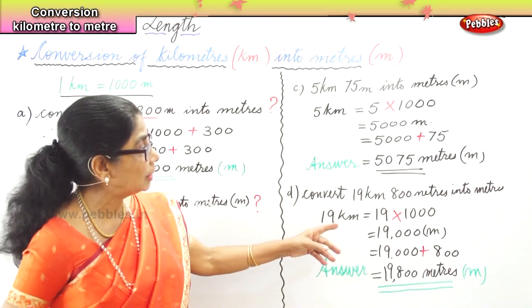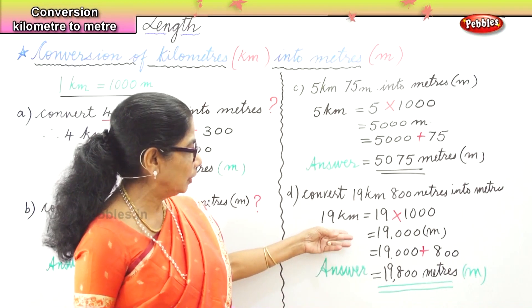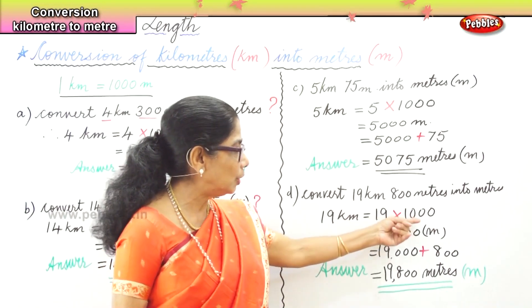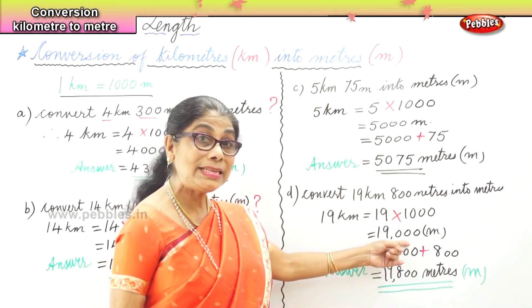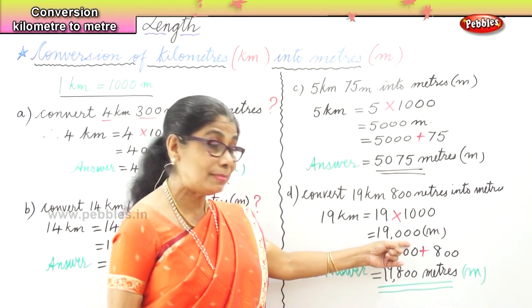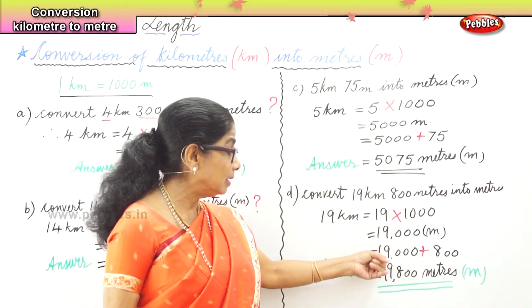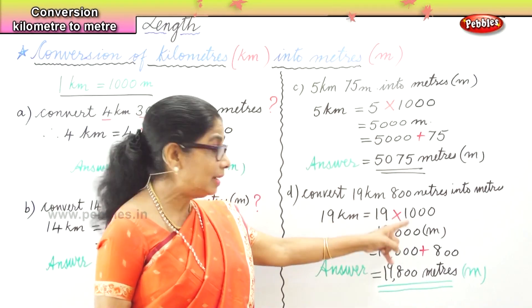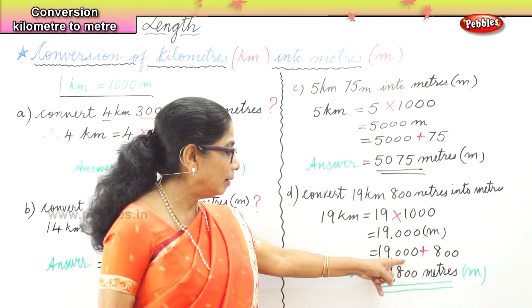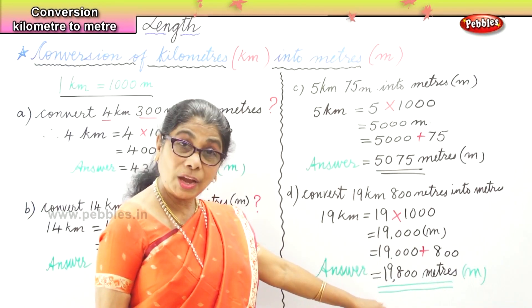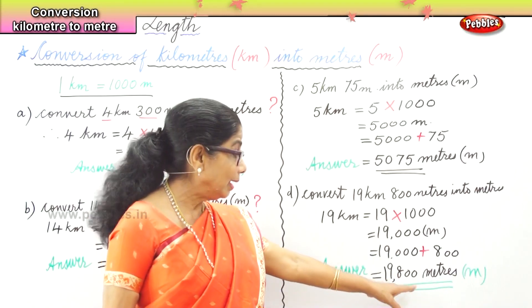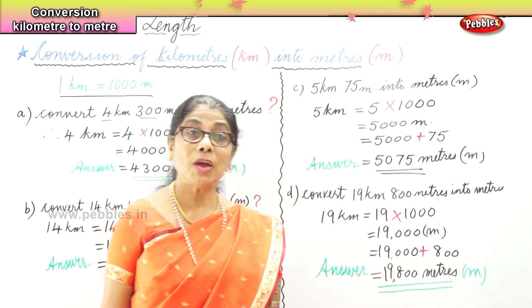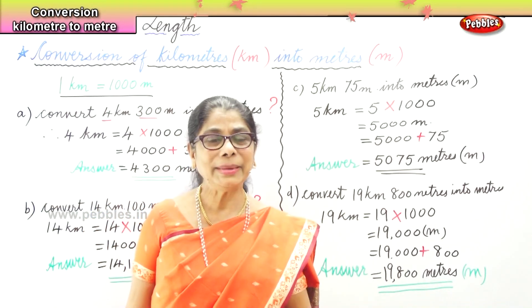1 kilometer is 1,000 meters. So 19 kilometers is 19 into 1,000, which gives you 19,000 meters, plus 800. We add on 800, so we get 19,800 meters.